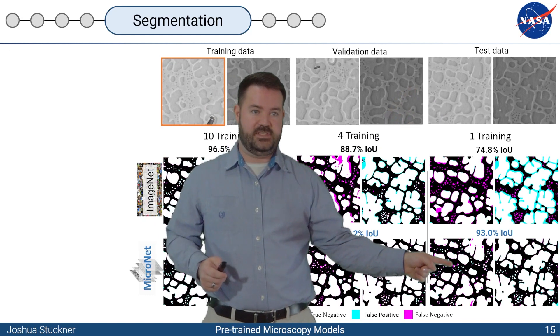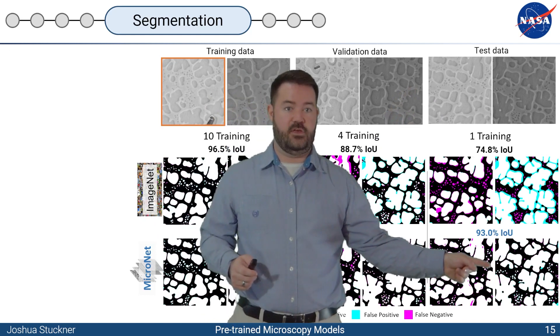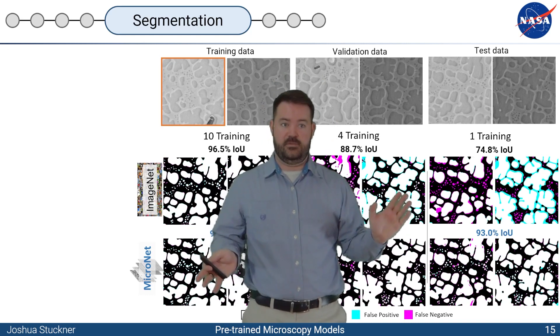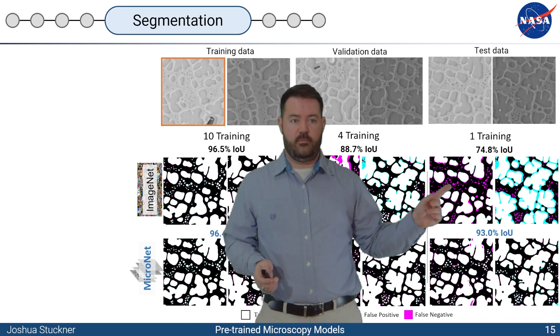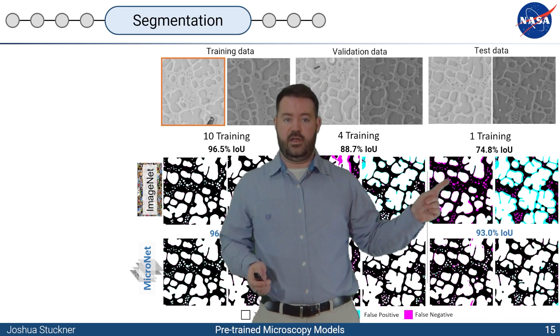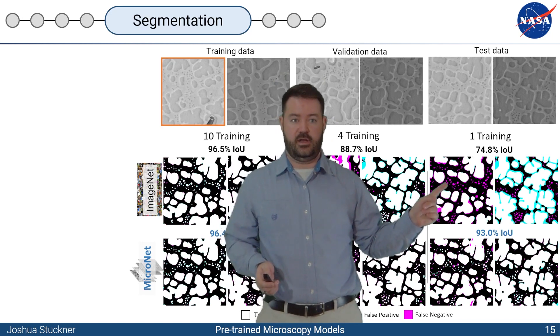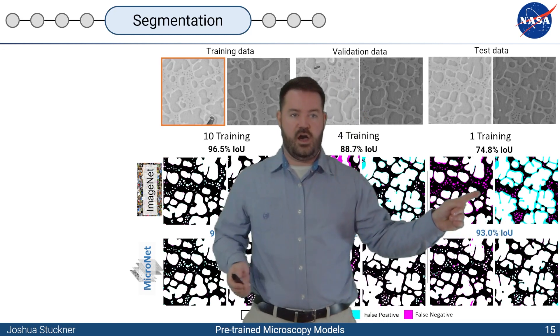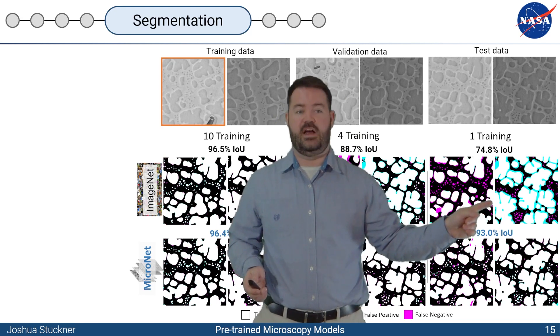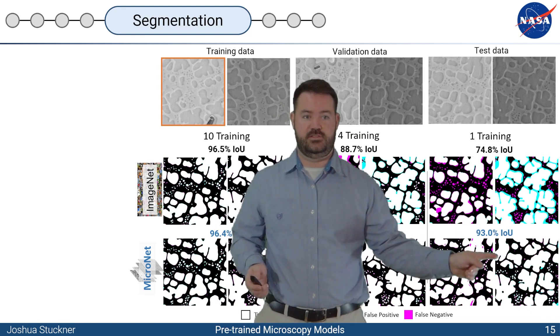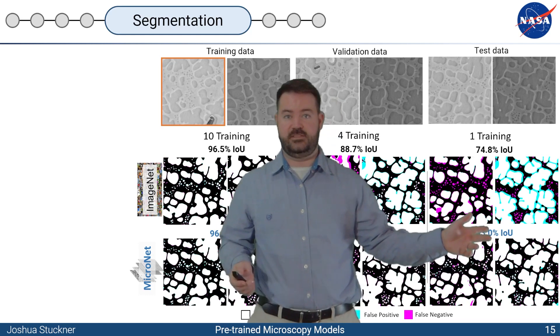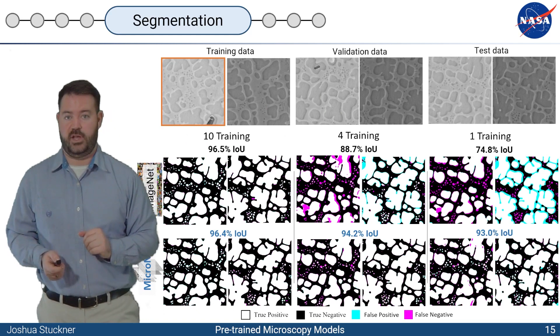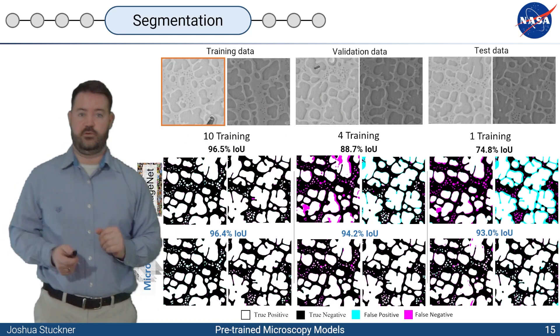These test images line up with this one here. And you can see, we're getting all the tertiary precipitates. Here, we're getting all the tertiary, even though the contrast is a lot different. Because the Micronet model has learned that microscopy images can be different contrasts, and it's still the same thing. But for ImageNet pre-training encoder, which is the one training image, we're losing all the tertiary precipitates here. We're over-segmenting. It's going to think of them as all one big blob, so we're not going to be able to do the analysis on that size measurements. Whereas here, we can do size analysis.